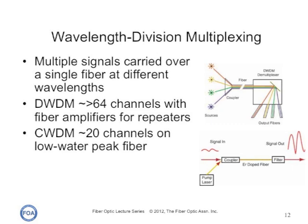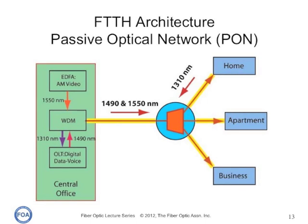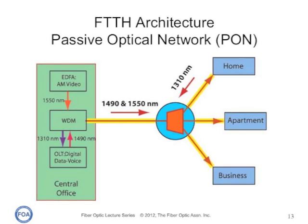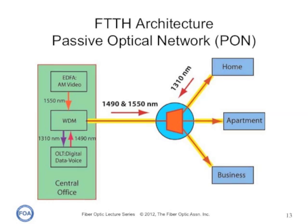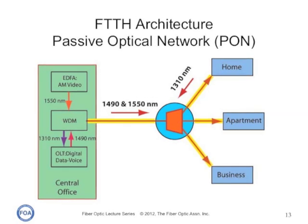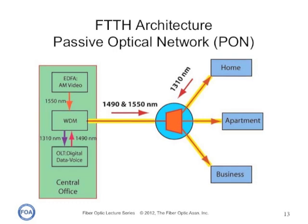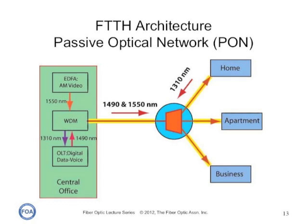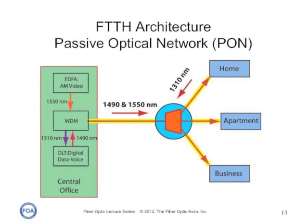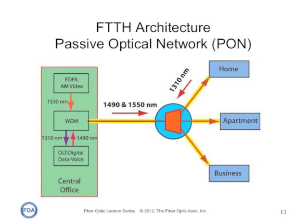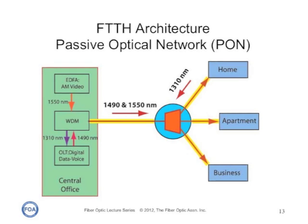Many systems today use wavelength division multiplexing. Fiber-to-the-home passive optical network systems, for example, use WDM to send different signals simultaneously upstream and downstream. Downstream, data and digital phone is transmitted around 1490 nanometers, and 1550 nanometers is used for analog cable TV-type video. Upstream, the signals go at 1310 nanometers. So passive optical network systems can have as many as three different wavelengths in the system at one time.